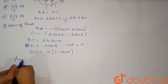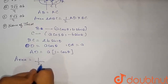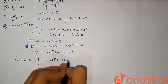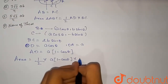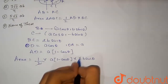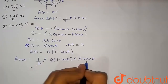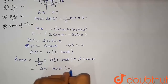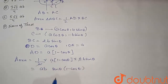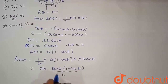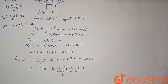The area of triangle ABC = ½ × AD × BC = ½ × a(1 − cosθ) × 2b sinθ = ab · sinθ · (1 − cosθ). To find the maximum area, we let t = sinθ · (1 − cosθ) and maximize this function.